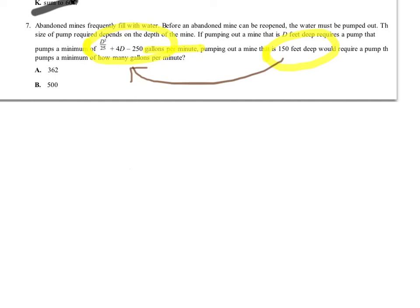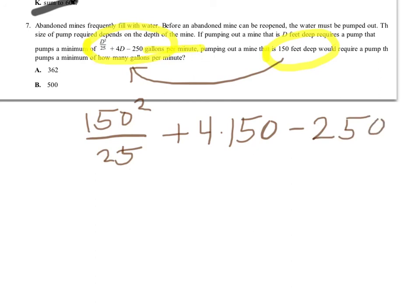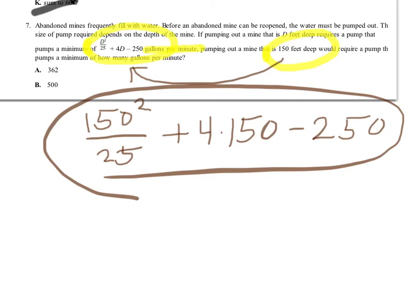You take the 150, and you put it into that equation, and you're done. You substitute it in. So you've got 150 squared divided by 25 plus 4 times 150 minus 250. Now where that equation came from, I have no idea really, but at that point, it doesn't really matter. But these questions are interesting because they bury a lot of context and a lot of story, but it's all really irrelevant.